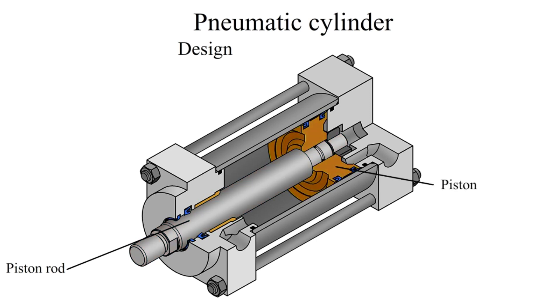The piston reciprocates in the barrel. The piston is attached with the piston rod to transfer the linear motion. The main function of the piston is to separate the pressure zones inside the barrel. The barrel is made from a cylindrical tube, and its main function is to hold cylinder pressure.